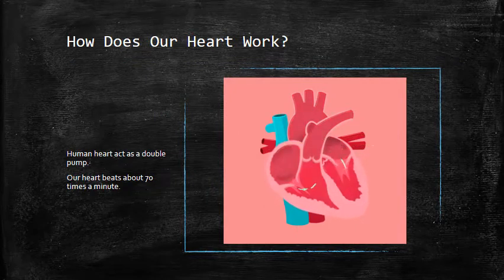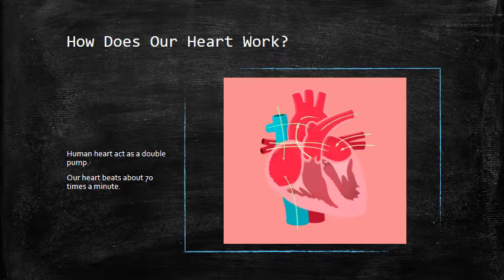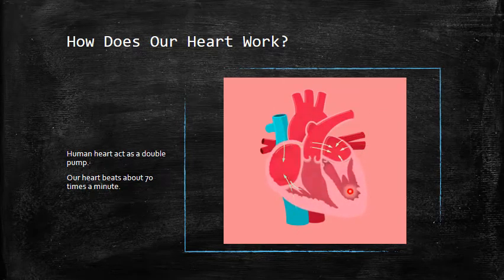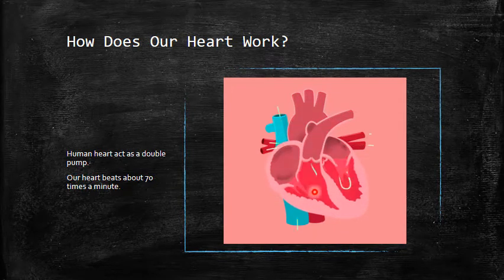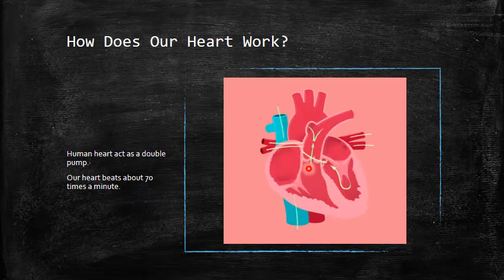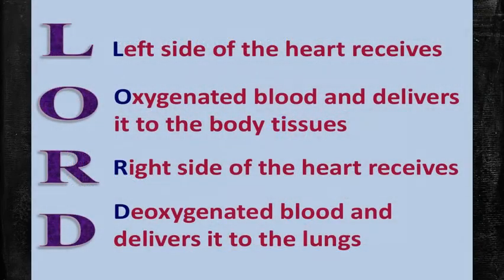So how does our heart work? The human heart acts as a double pump. Blood from the lungs and other body parts enters the atria. The two atria contract at the same time and push the blood toward the ventricles — that is the first pump. Then both ventricles contract at the same time and pump the blood toward the lungs and other body parts — that is the second pump. Your heart beats about 70 times a minute.